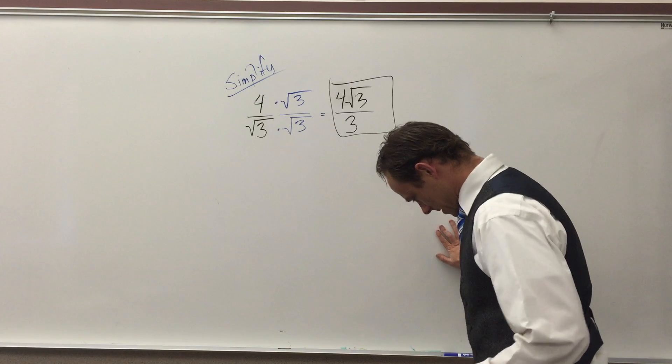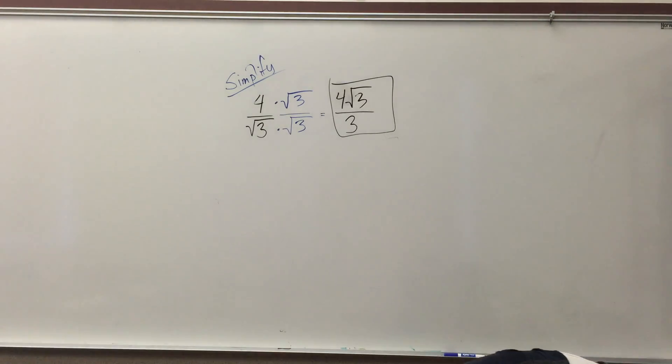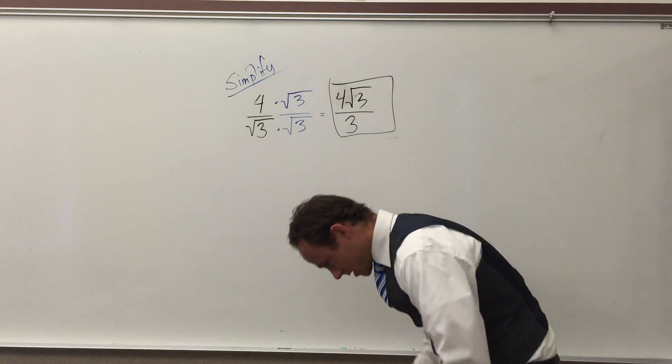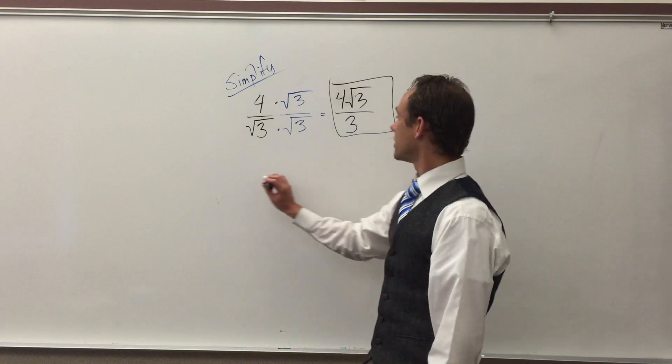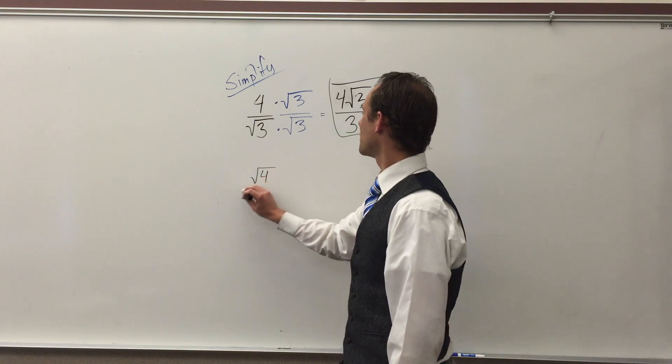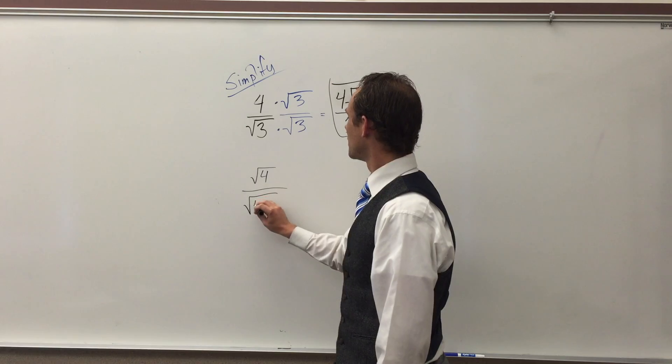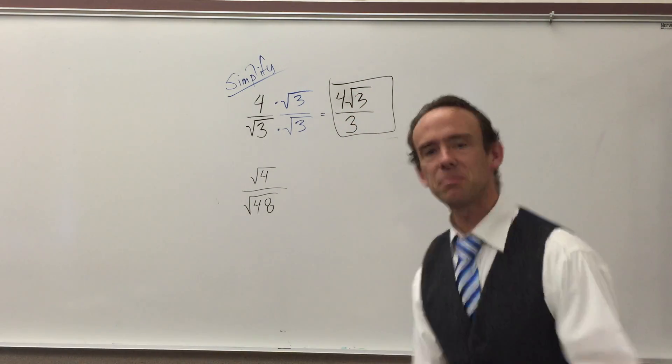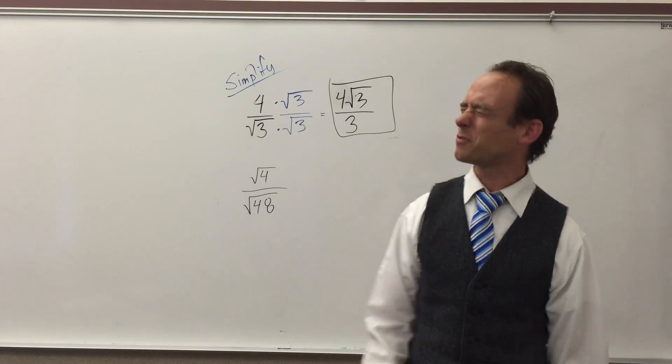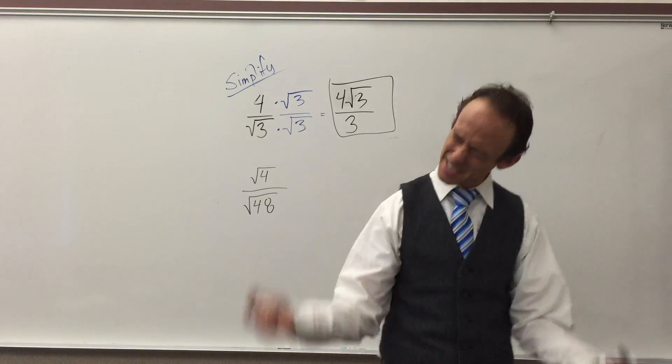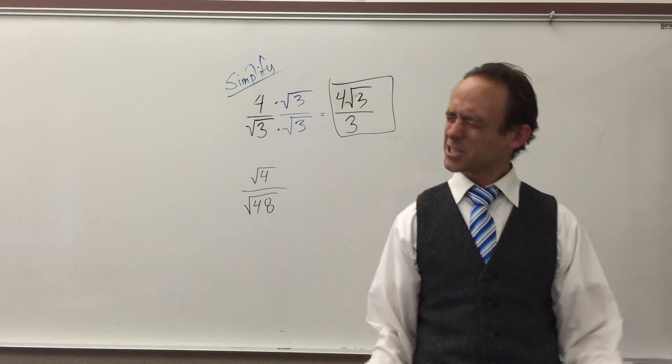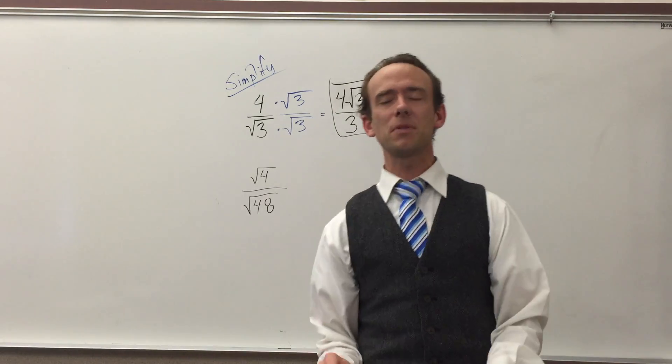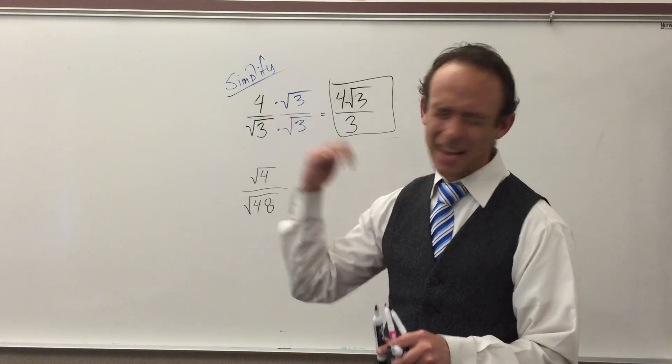Look at the floor again. Here we go. Root four over root forty-eight. It's the same question. It says simplify. And the reason we need to simplify is because there's a radical in the denominator. And so what we got to do to make it simplified is take that radical out of the denominator.